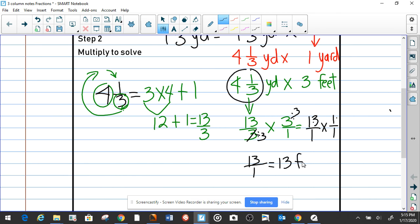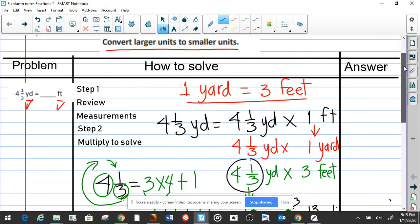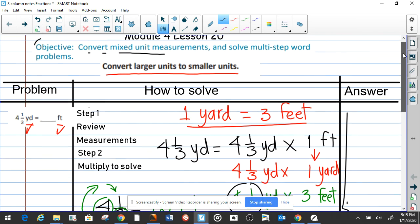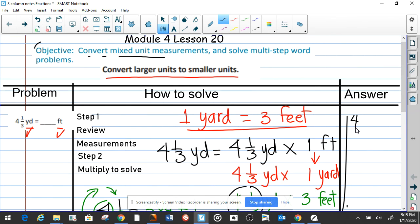So now we know that the answer for this problem is 13 feet. Let's write the answer: 13 feet. So 4 and 1/3 yards equals 13 feet. I'm going to write it that way because I don't have any room.